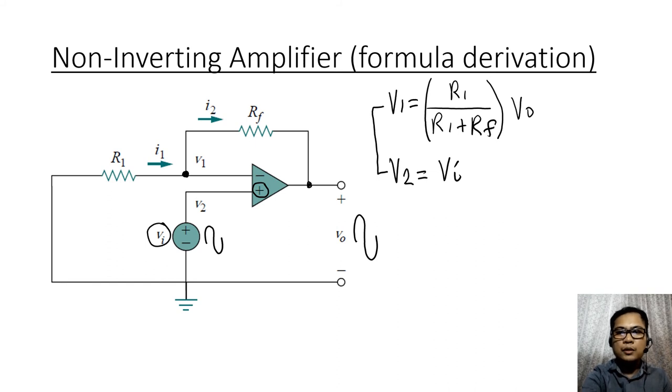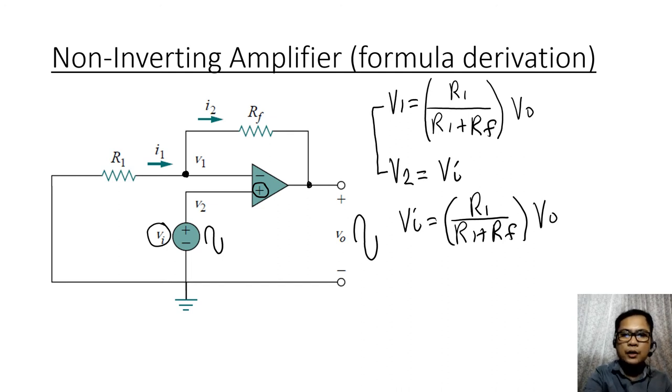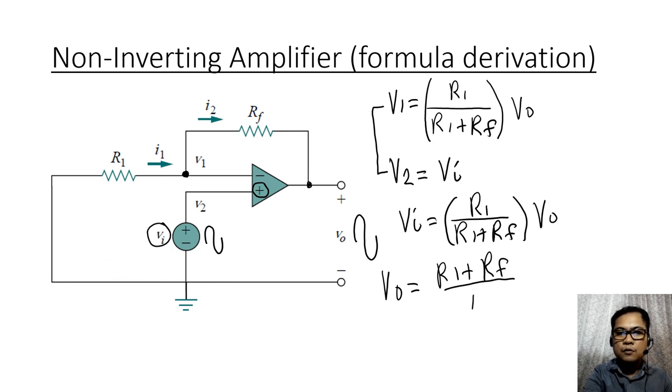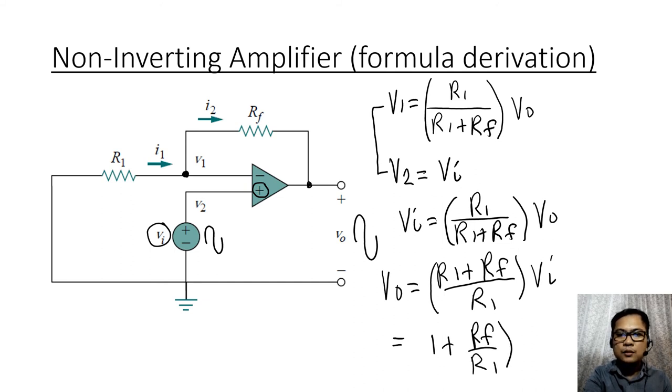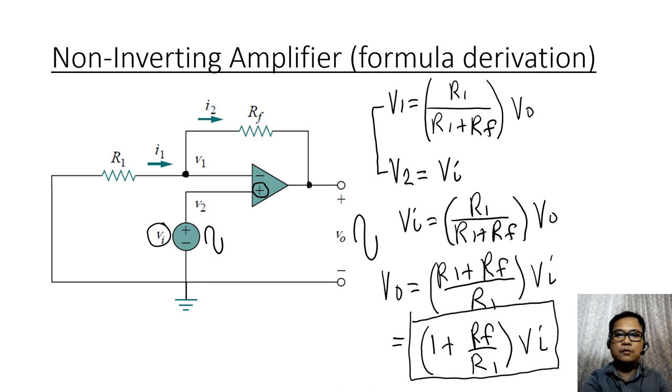Since v1 and v2 can be equated, you have v1, or rather v input, is equal to r1 over r1 plus rf times your output voltage. So simply cross multiply to get your v out. So v out is equal to r1 plus rf over r1 times v input. Then dividing through with r1, you get 1 plus rf over r1 times your v input. So notice that this formula doesn't have a negative in front, so this is a non-inverting amplifier. That means the output is in phase with your input.